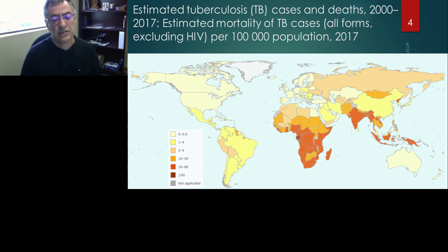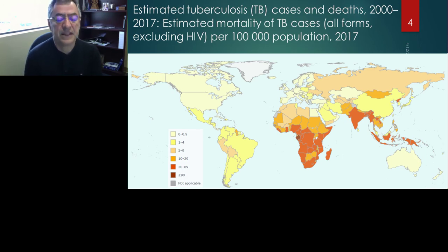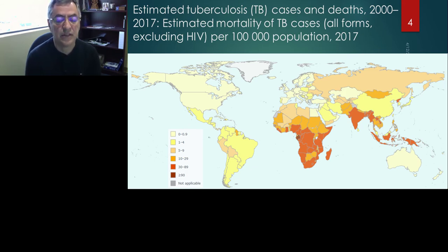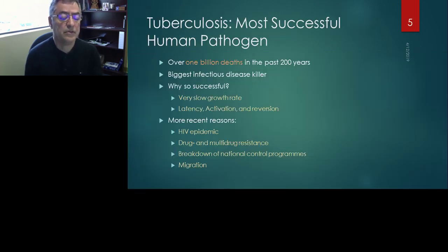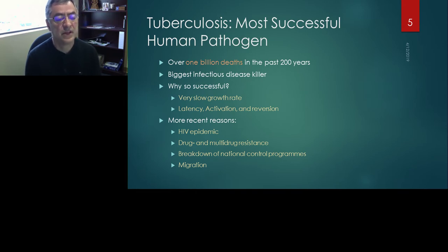The active form of the disease affects about 9 million people every year — 9 million new people develop the active form of the disease, and 1.5 million die from it. The estimation for the last 200 years is that 1 billion people have died from this disease.